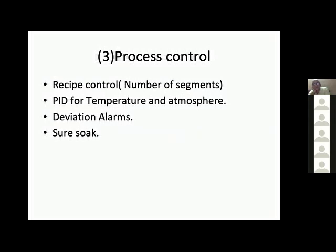The next is process control. Furnaces are equipped mostly with recipe control of the process. In some furnaces there is a limitation on the number of segments that can be programmed — like four segments: heating, carburizing, diffusion, and hardening. In other controllers you can program any number of segments. The advantage with more segments is that you can program ramp-up segments, which enables you to reach temperature and CP at the same time, making the process more repeatable. Otherwise, depending on the load, temperature may lag behind CP or CP may lag behind temperature.